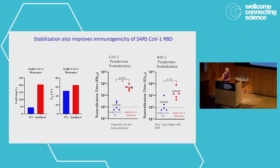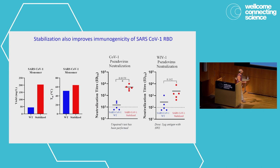We wanted to see if this increase in stability translates to improved immunogenicity for other SARS-CoV-1 proteins. This is SARS-CoV-1 — we were able to stabilize it, and we see substantial improvements in protein yield as well as the thermal melting temperature. Most importantly, as we saw for SARS-CoV-2 RBD, we see very significant increases in neutralizing titer, which is really what you want to get.